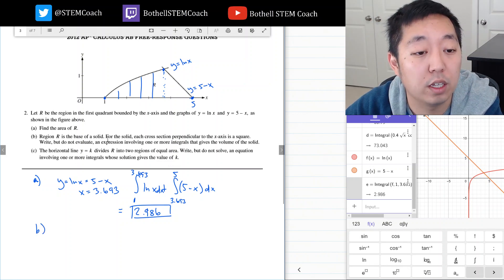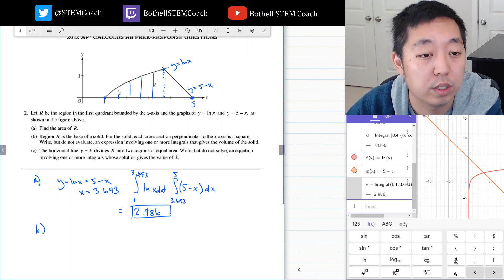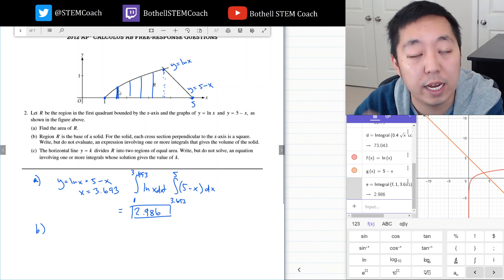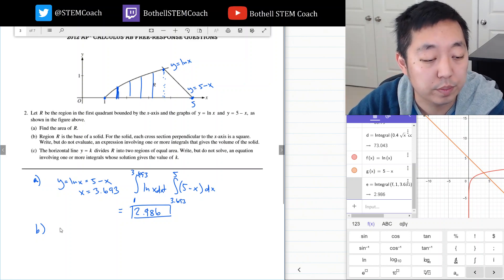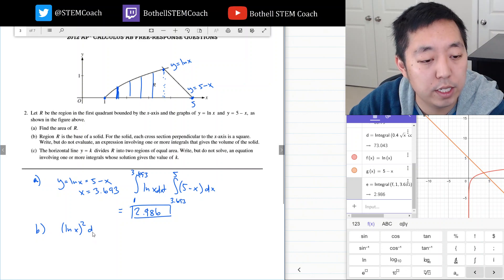Part b: Region r is the base of a solid. For the solid, each cross-section perpendicular to the x-axis is a square. Write but do not evaluate an expression involving one or more integrals that gives the volume of the solid. So each of these slivers is now a square. I know the height of the rectangle is simply ln of x or whatever the function is. So the area of that square is the side squared, so ln of x squared times dx, which is the thickness of that square.